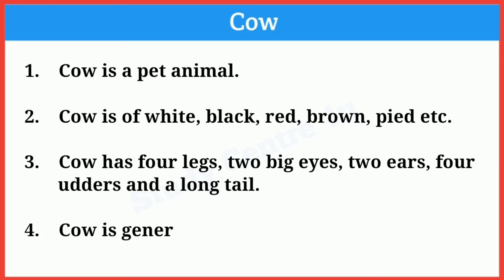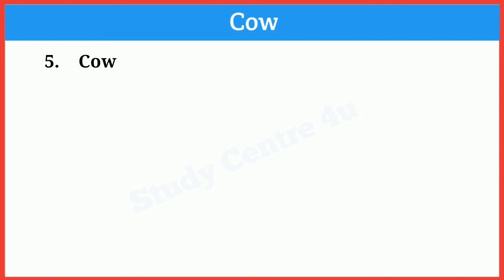Fourth line: Cow is generally found everywhere. Five line: Cow eats grass, straw, grain, and bran.